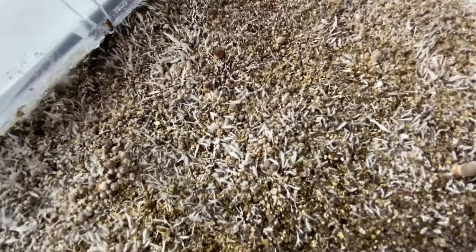Now, let's inoculate our spawn bag with agar. First, make sure to spray and wipe down the bag with 70% isopropyl. Then, cut open the top of the spawn bag and give it a quick mix. Next, with a sterile blade, cut a few chunks of agar, and then drop them into the spawn bag.